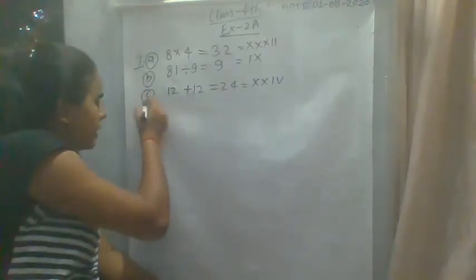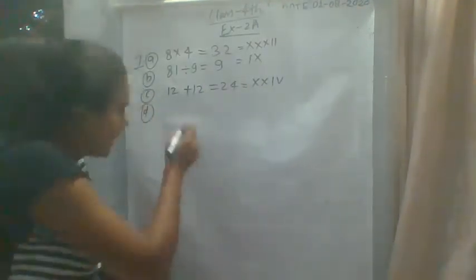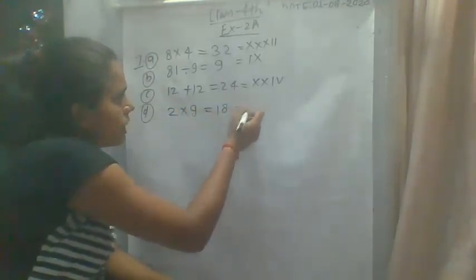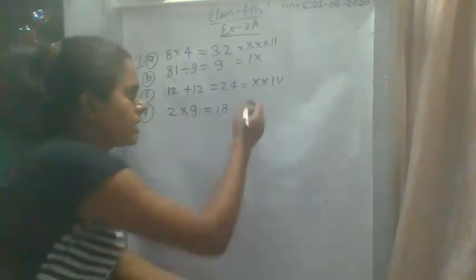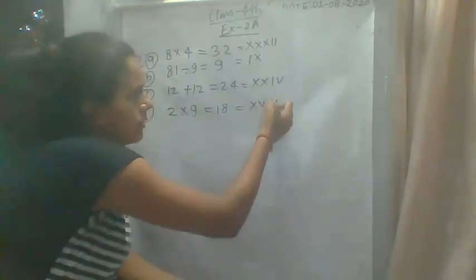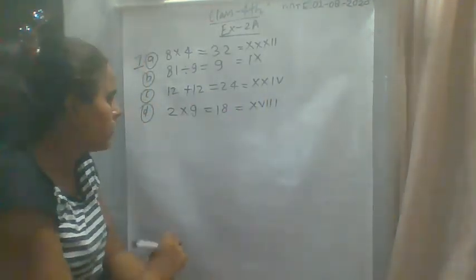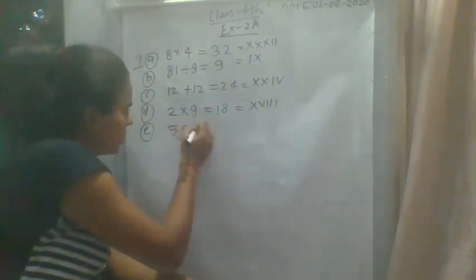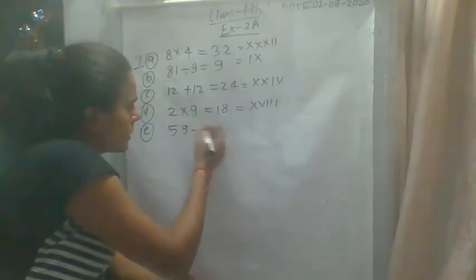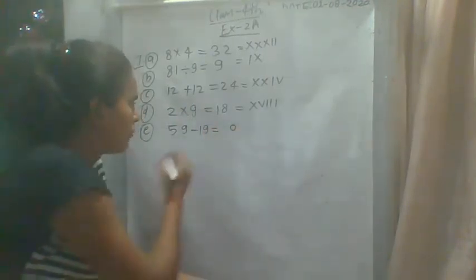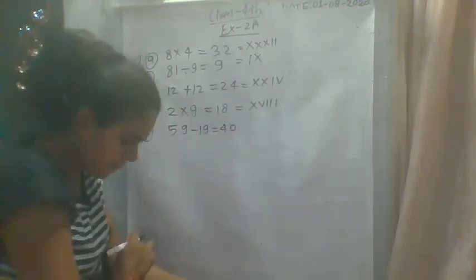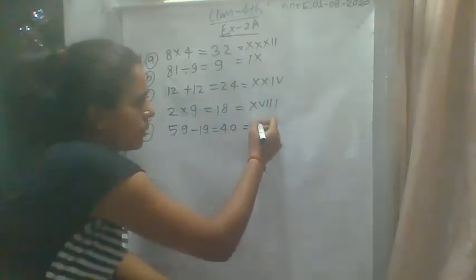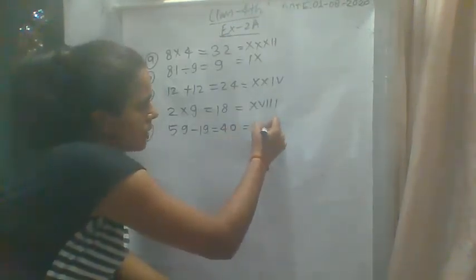Now we see D: 2 times 9, so we have 18, that is 10 plus 8, written as XVIII. Then E: 59 minus 19. 9 minus 9 is 0, 5 minus 1 is 4, so we have 40, that is XL.